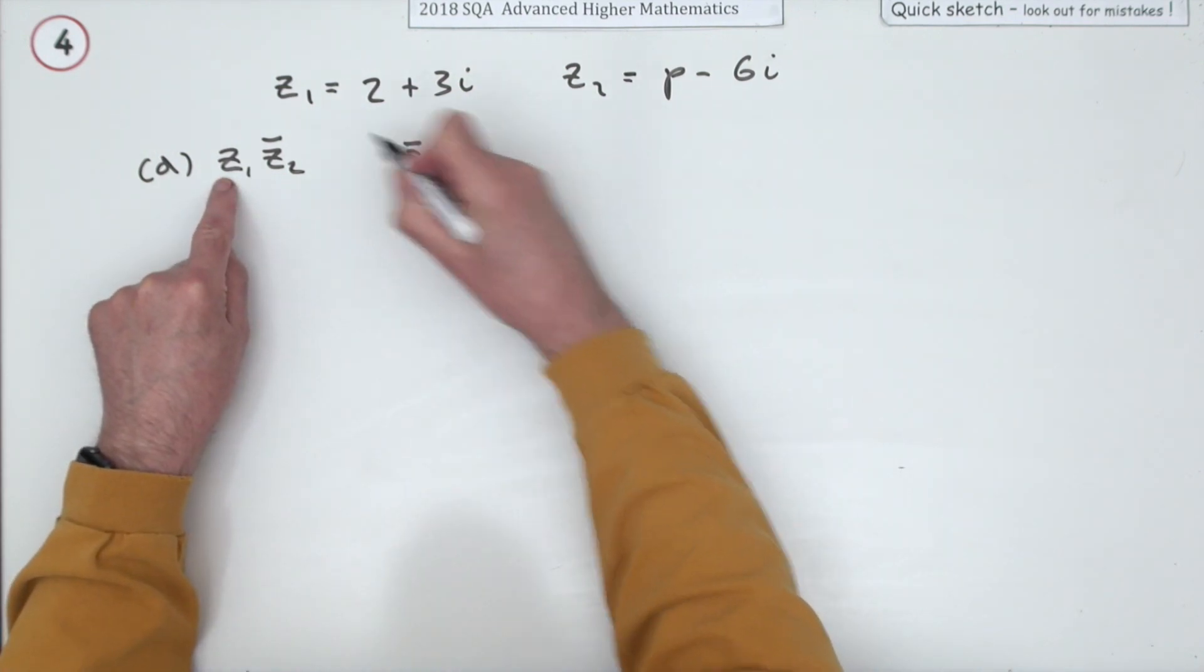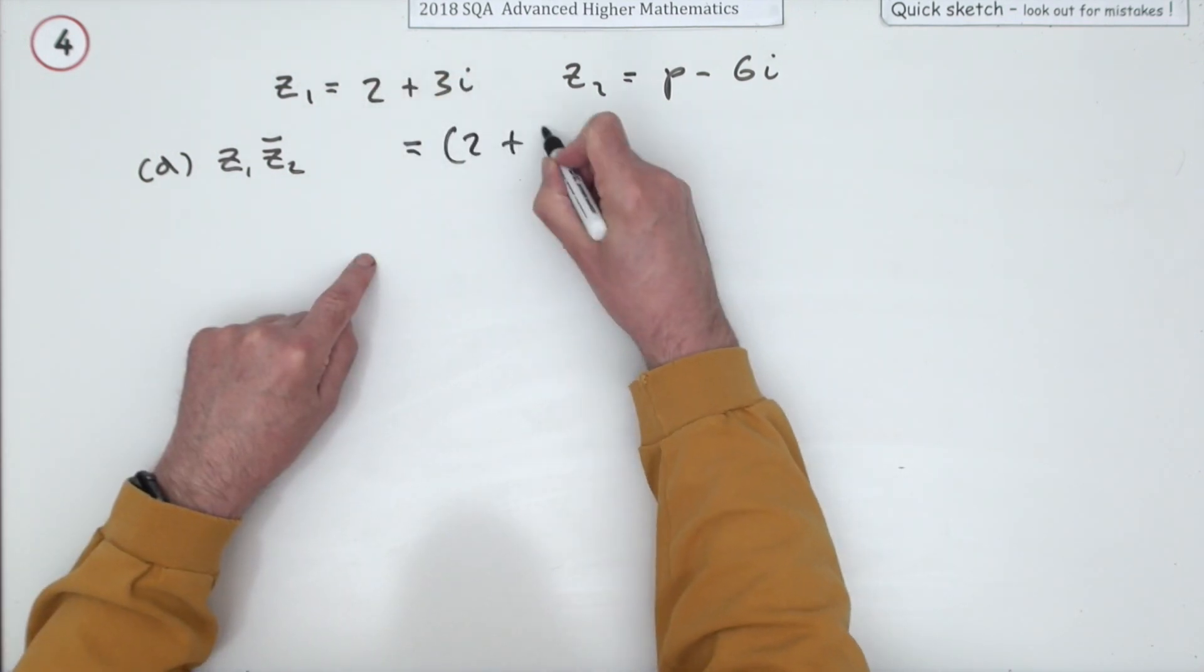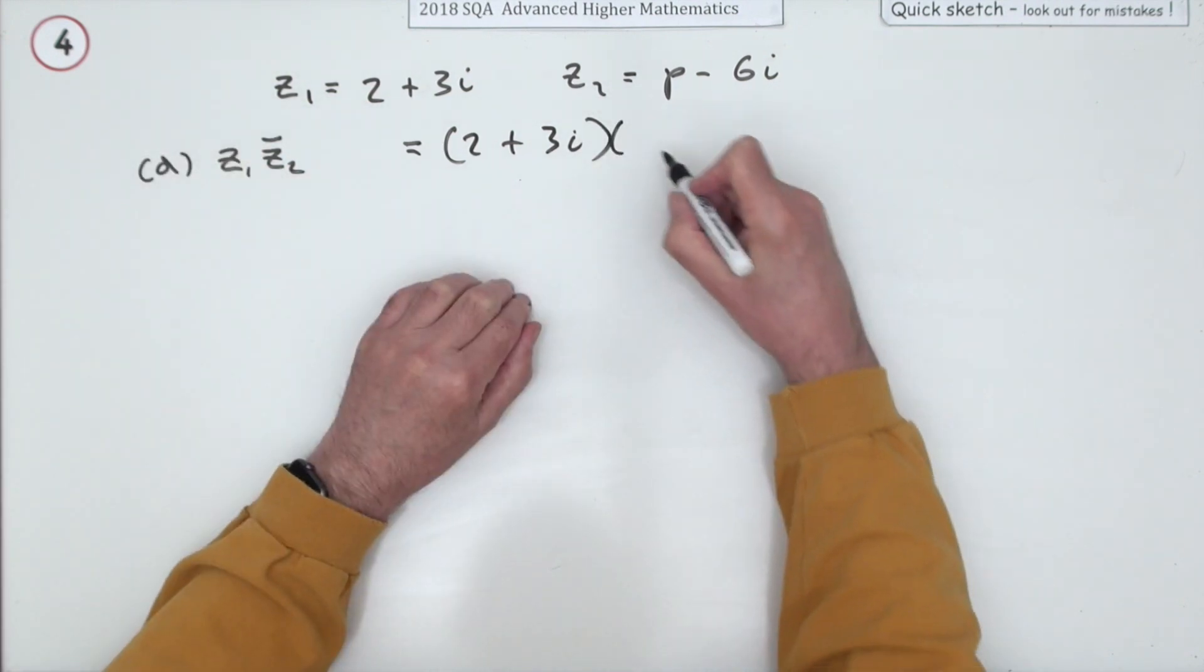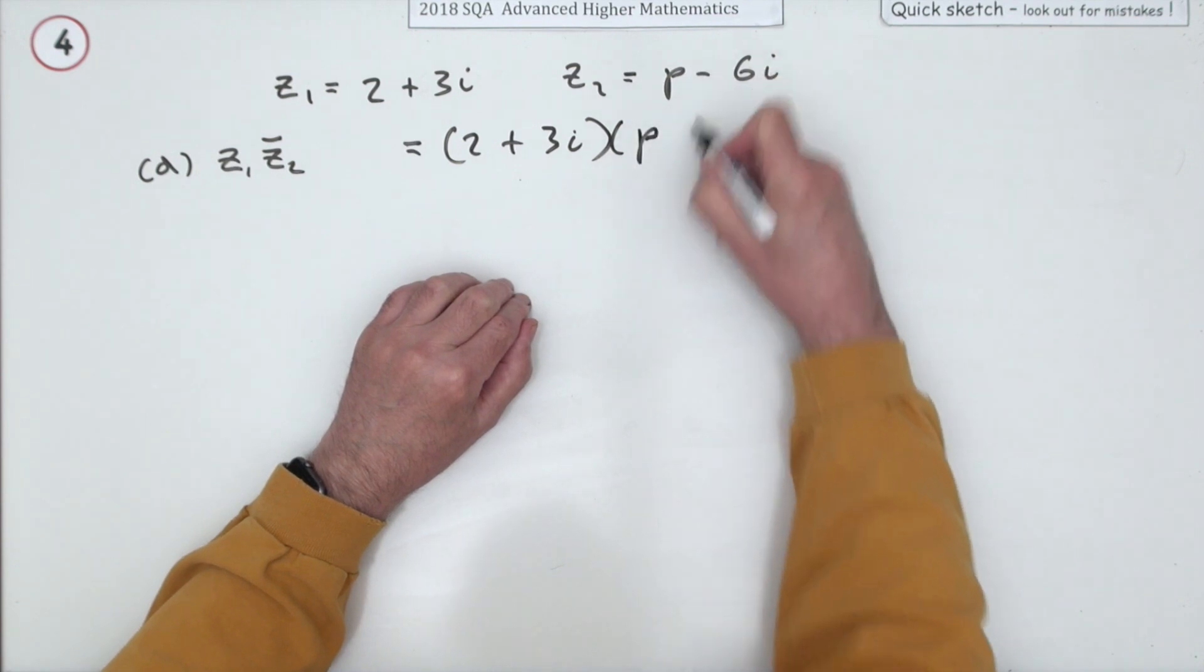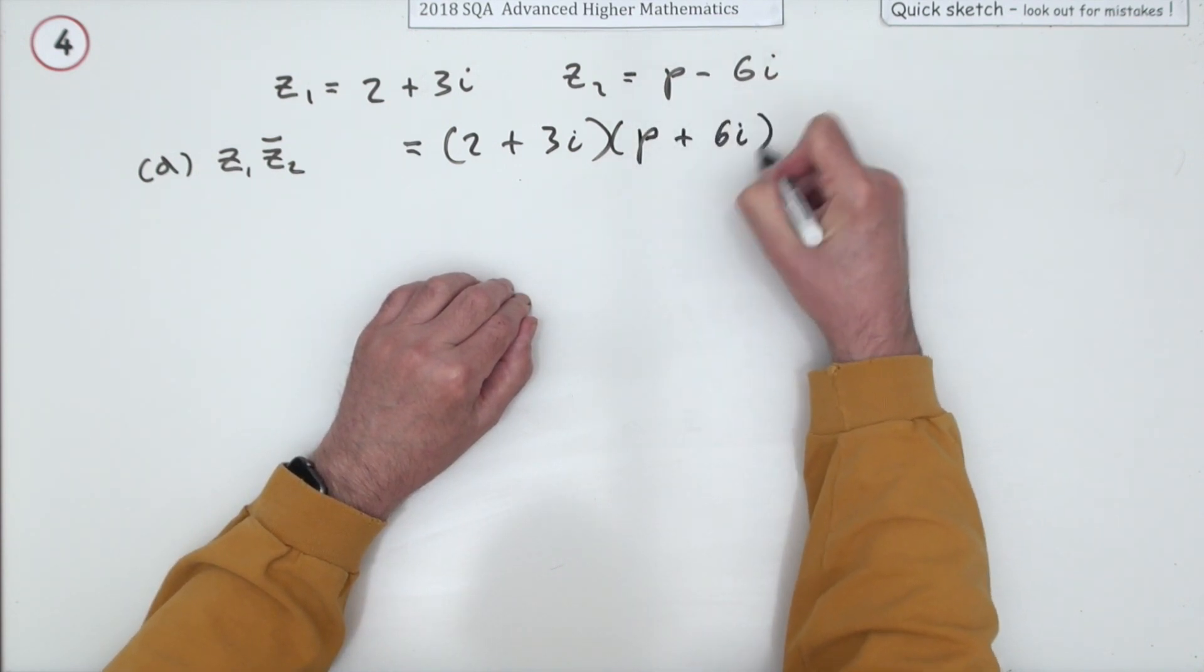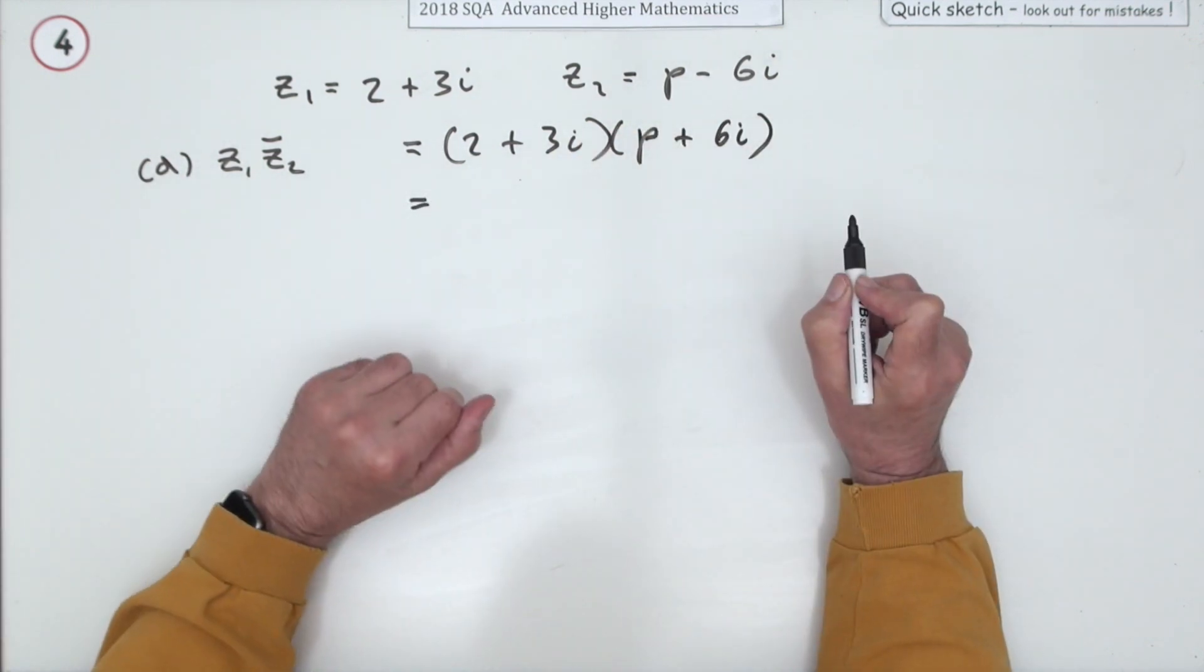Well, Z1 is this first number, two plus three I. Z2 with that little bar above it means the complex conjugate of this, which means the opposite of the imaginary part, so plus six I. Now it's just a case of multiplying that out.